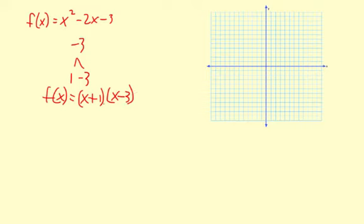We have x plus 1 times x minus 3. That's the function in factored form. And the x-intercepts would be at 3 and negative 1.